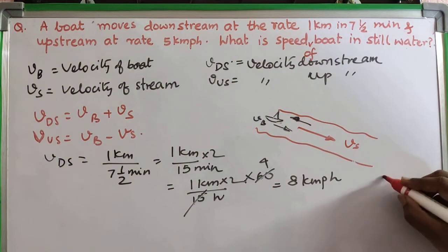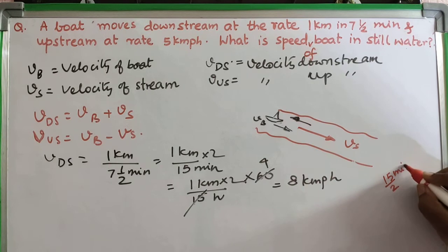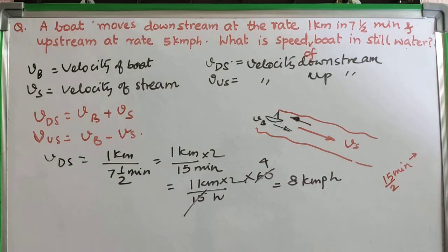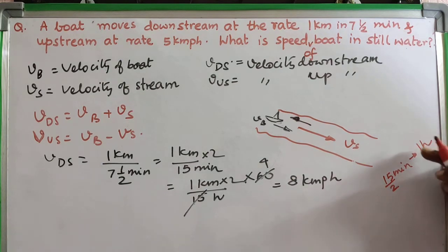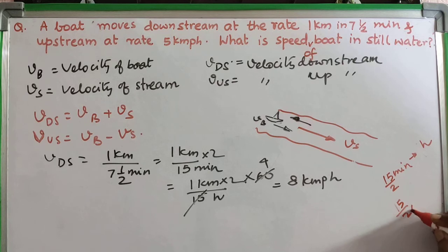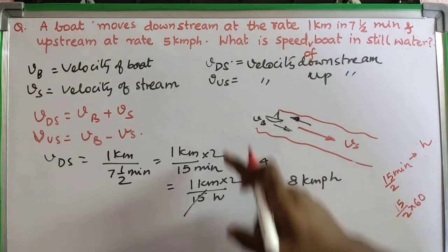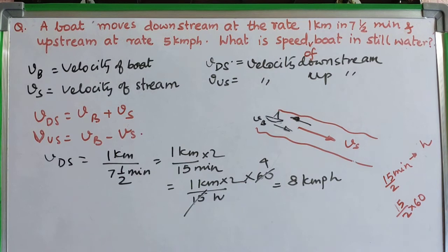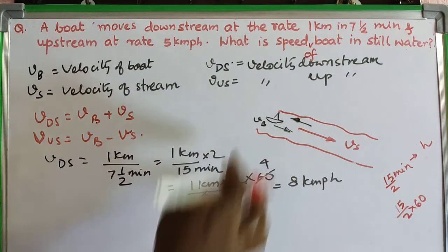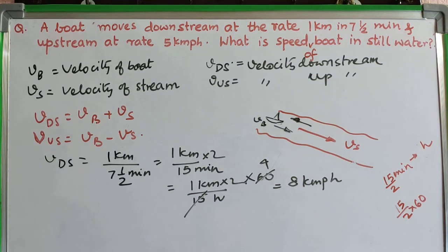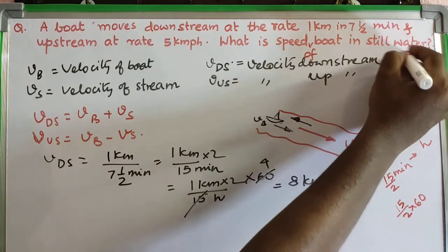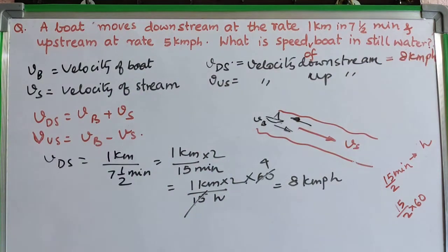To clarify the unit conversion: 15 by 2 minutes — I need to convert to hours, so I divide by 60. That puts 15/2 × 60 in the denominator, which flips to give 2 × 60 divided by 15 in the numerator, resulting in 8 km/hr. So VDS equals 8 km per hour. The upstream speed is simply given as 5 km per hour.